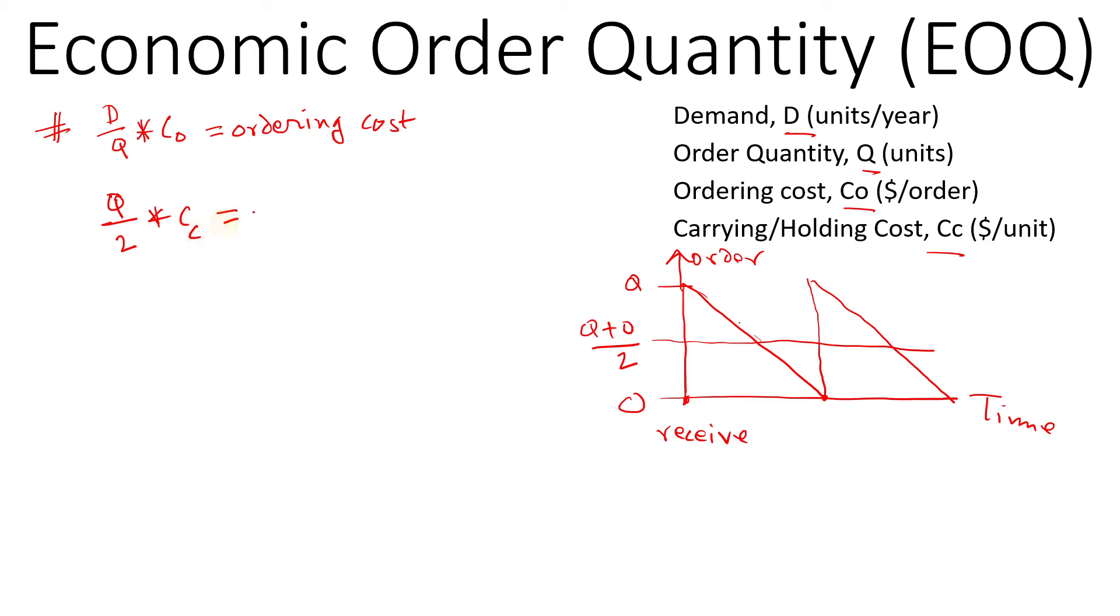So the total cost for this inventory would be the ordering cost, D/Q times C0, plus the carrying cost, which is Q/2 times CC. Now if you look at these two equations, I can draw it here.